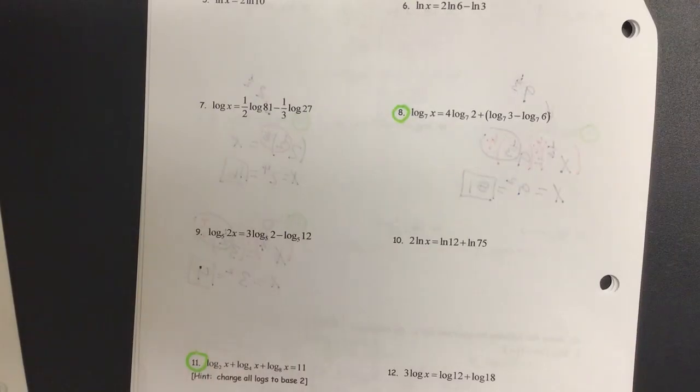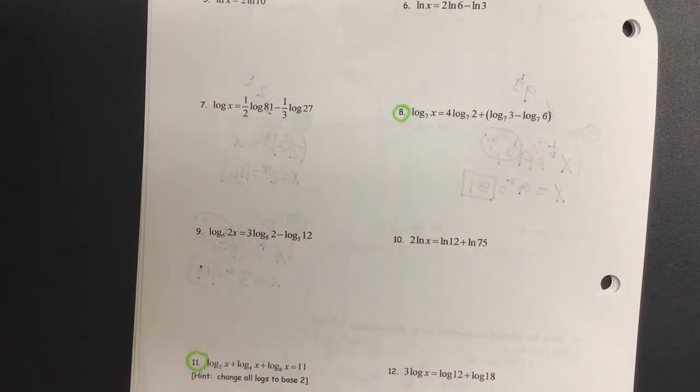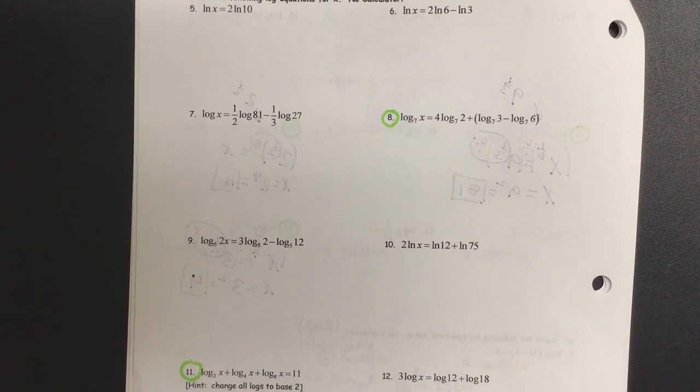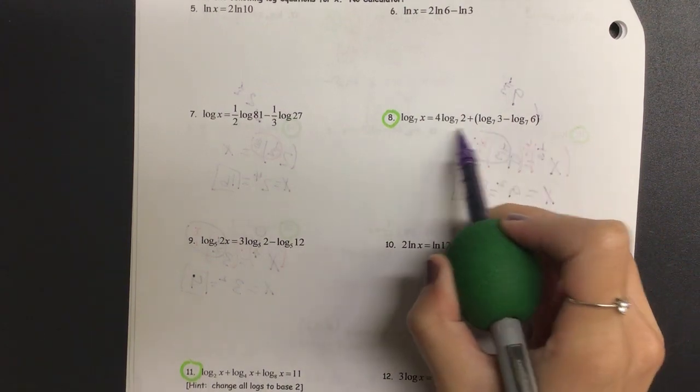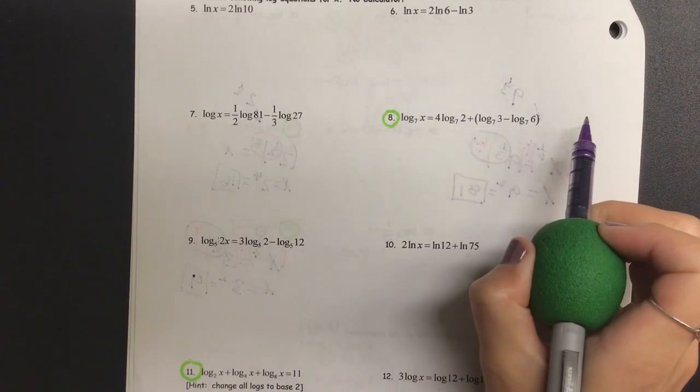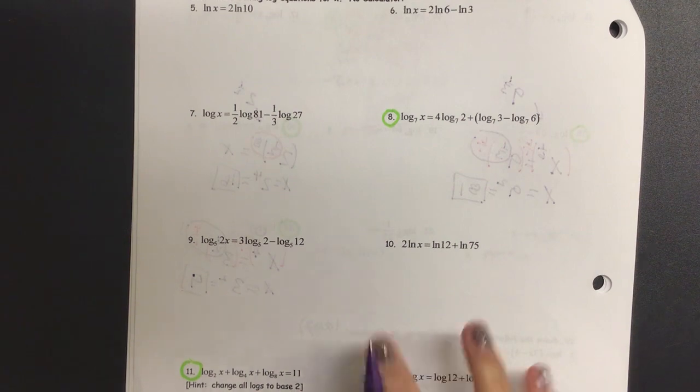Let's go on to our next number, number eight. What is scary about number eight? We have a lot of logs right, so we have to go in and condense this. When I say condense I need one log on the left, one log on the right. But look at the right side of the equation, how many logs do I have? Three of them. So let's try to condense this step by step.